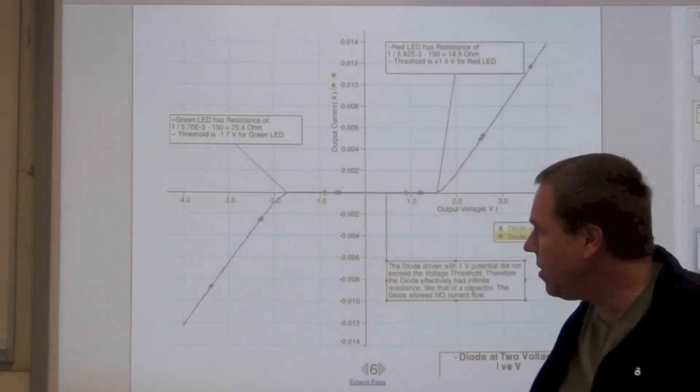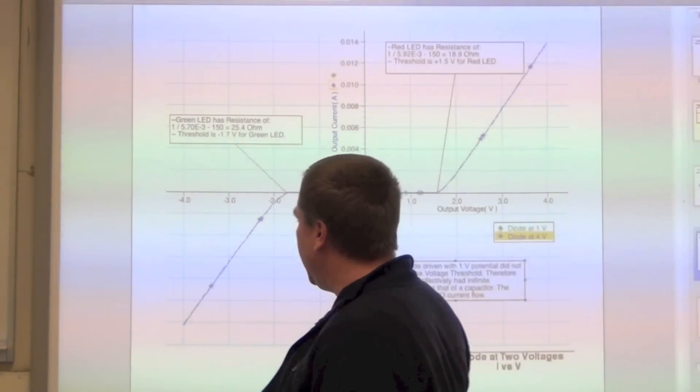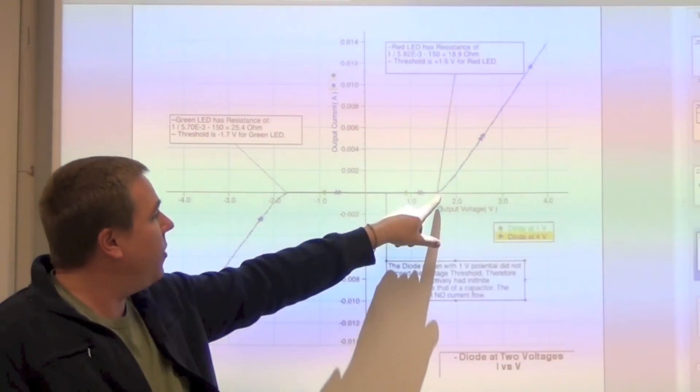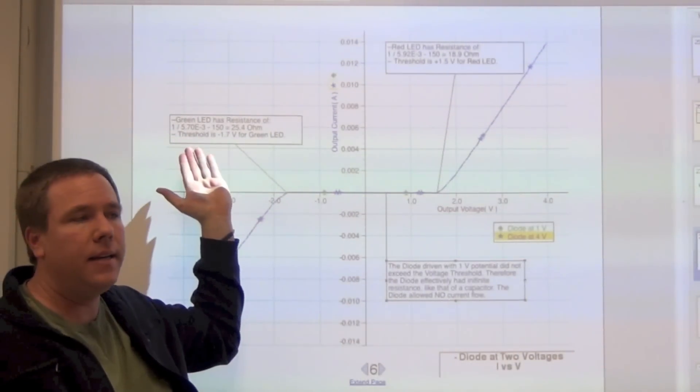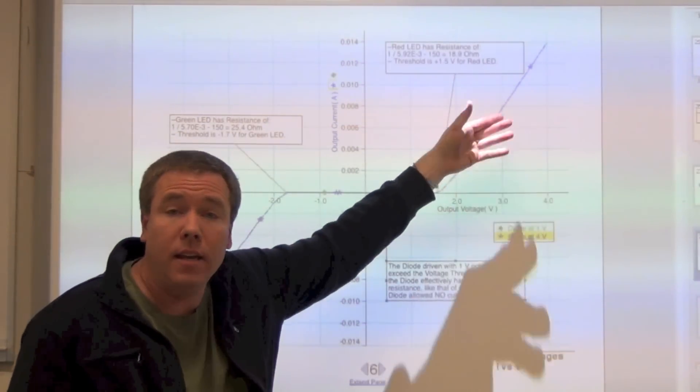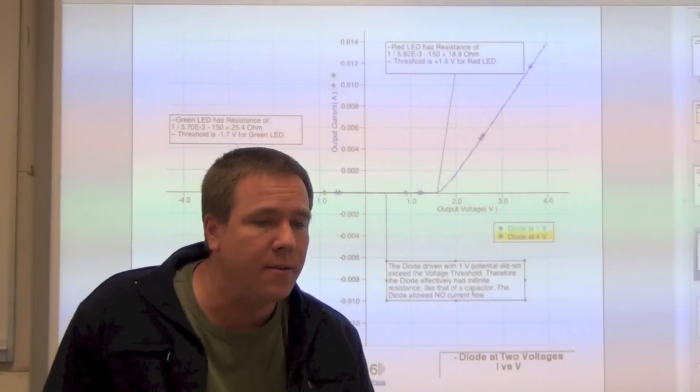In your analysis, it should look something like this where you're highlighting, for me, the green was down here and the red was up there. And I pointed out where the thresholds were and what those values were. And I also showed the mathematics to find the resistance here and the resistance here. Inverting the slope and then subtracting 150 ohms from that to give me the resistance of the diode.